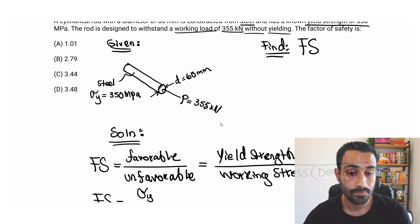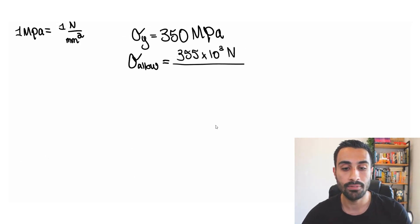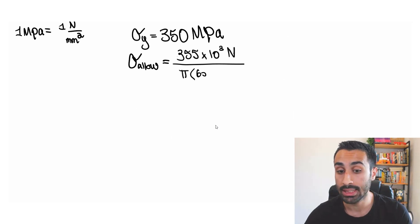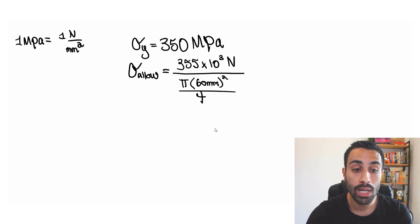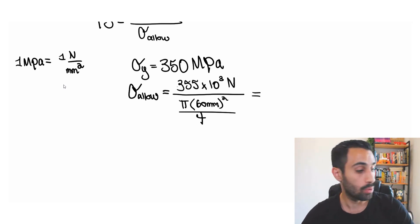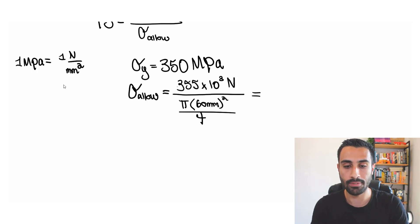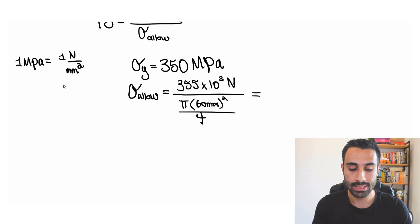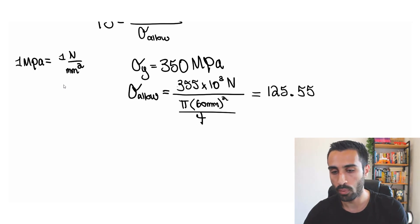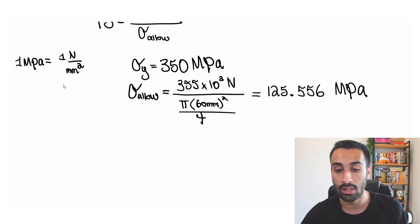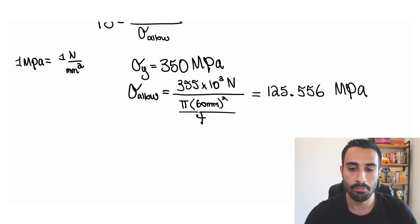The cross-sectional area is the area of a circle: A = π × D² / 4 = π × (60 mm)² / 4. So sigma allowable = 355 × 10³ N divided by (π × 60² / 4) mm². The units give N/mm², which equals MPa. Plugging into the calculator: 355e3 divided by (π × 60² / 4) gives approximately 125.556 MPa.